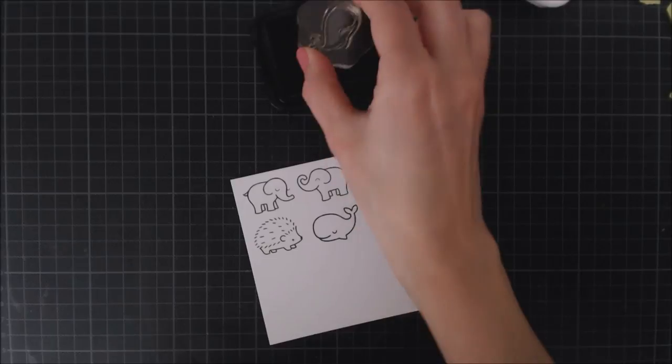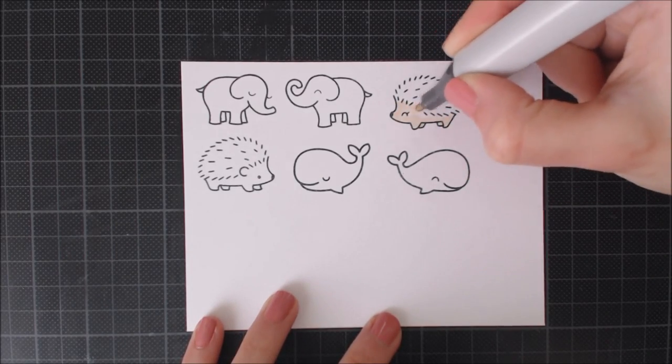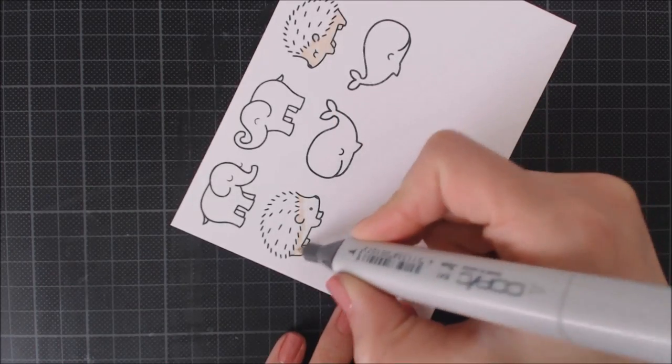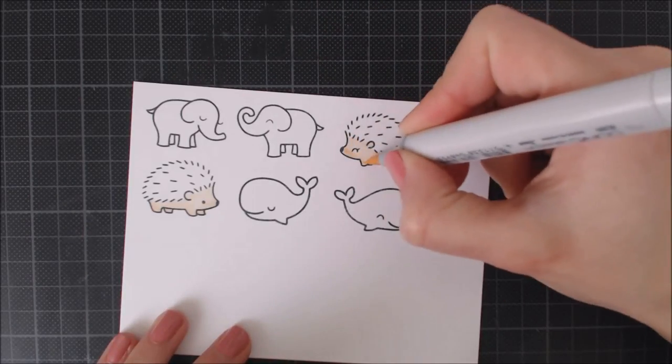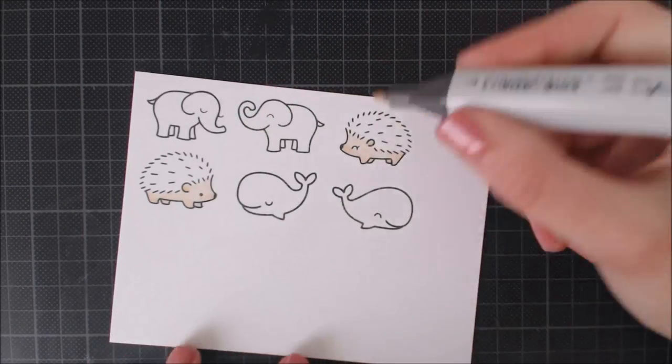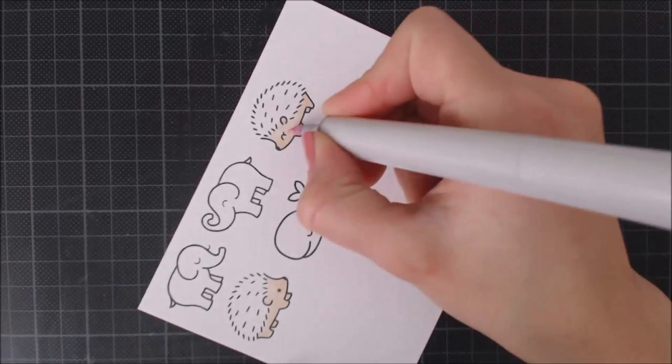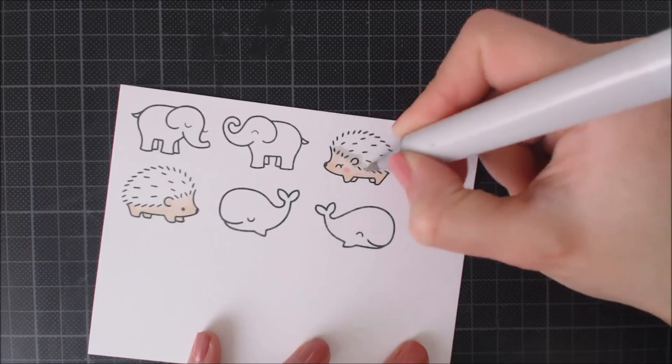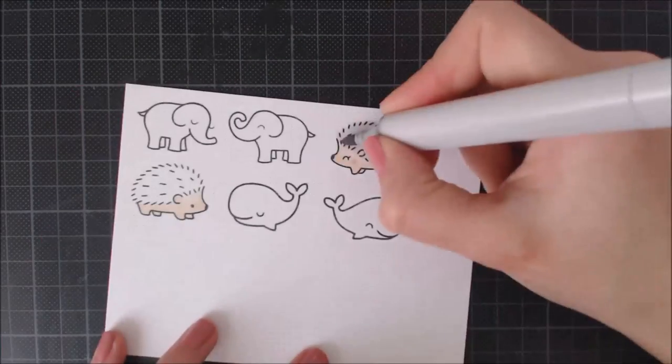I'm stamping all these little images with Memento black ink because I'm going to color them using Copic markers and this ink is Copic friendly so it won't smear or bleed with the Copic markers. I'm going to be doing some quick blending with my markers and I'm going to show you which colors I'm using for each critter.